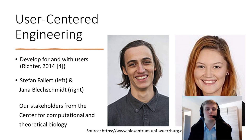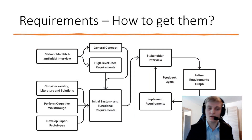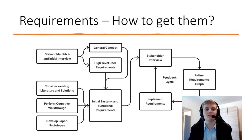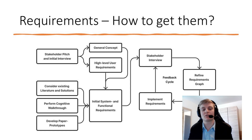Therefore, we collaborate with our stakeholders, Stefan Fallert and Jada Blechschmidt, who are working at the Center for Computational and Theoretical Biology, researching species diversity and the impact of land use and climate change on it. Together with them, we develop the requirements of the project. This begins with a stakeholder pitch and initial interview to make sure we understand that pitch correctly, yielding a general concept and high-level user requirements. These need to be refined, so we consider existing literature and solutions so we do not reinvent the wheel.